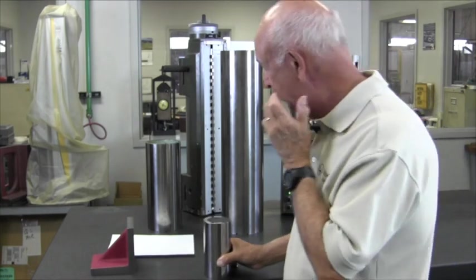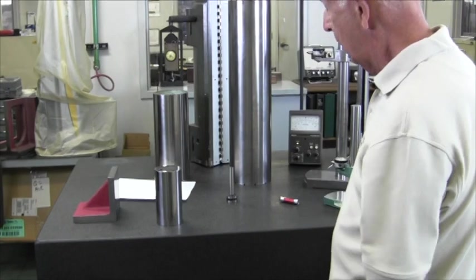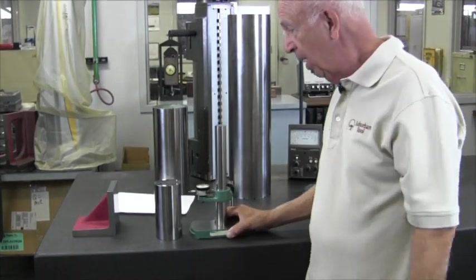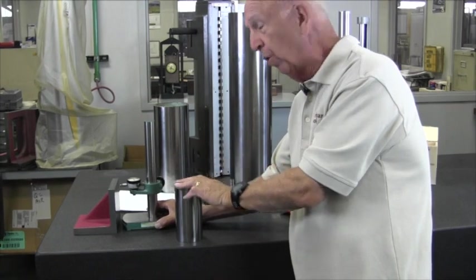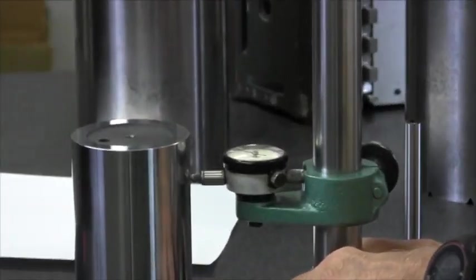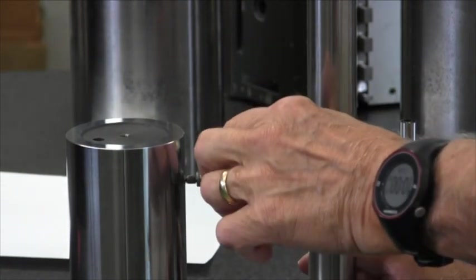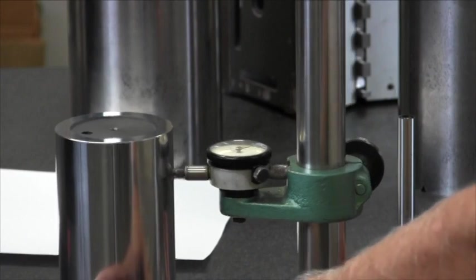And here's another way. We can use it as a master. So we can take an indicator like so. And we can, first of all, line it up with the height that we've got here on the part that we're going to check. And we're going to bring it over there with a cylinder square. And we're going to zero in our gauge, which is right there.